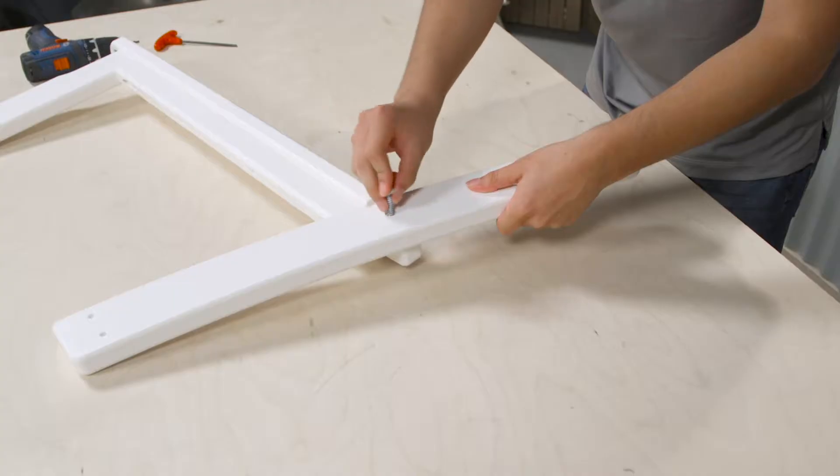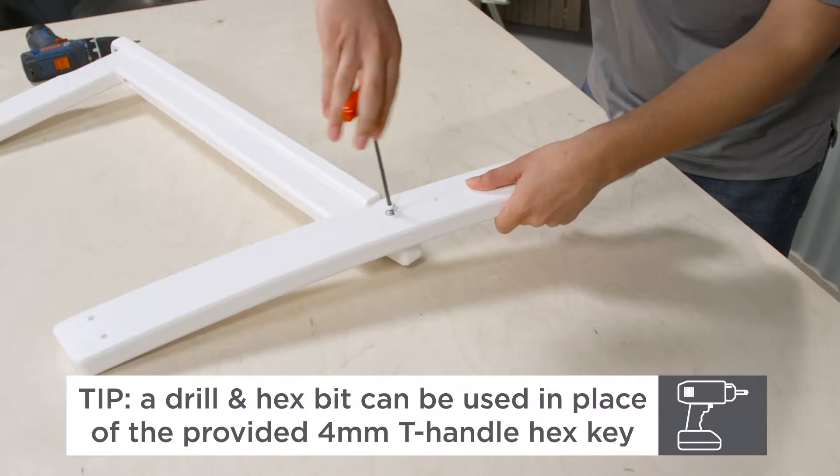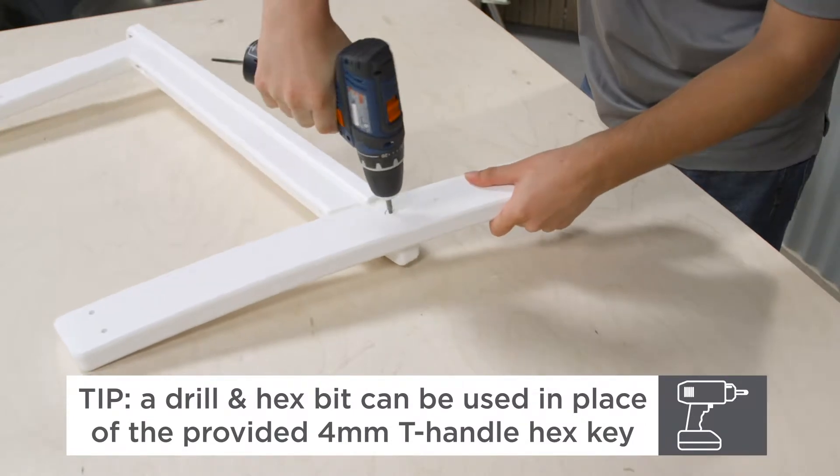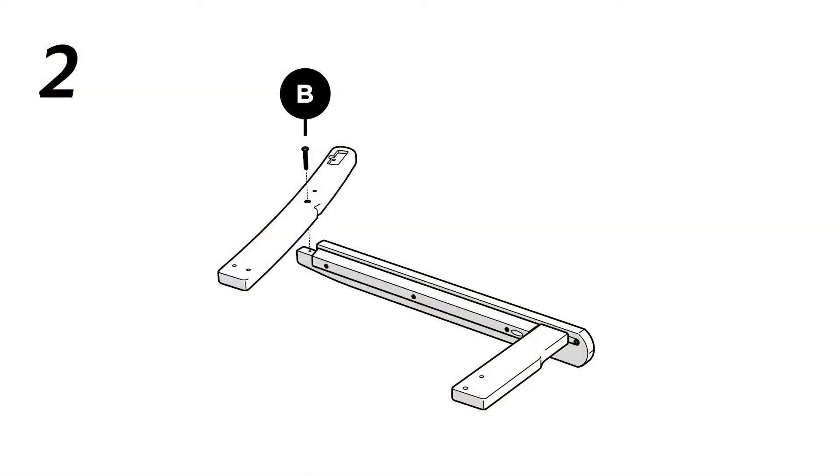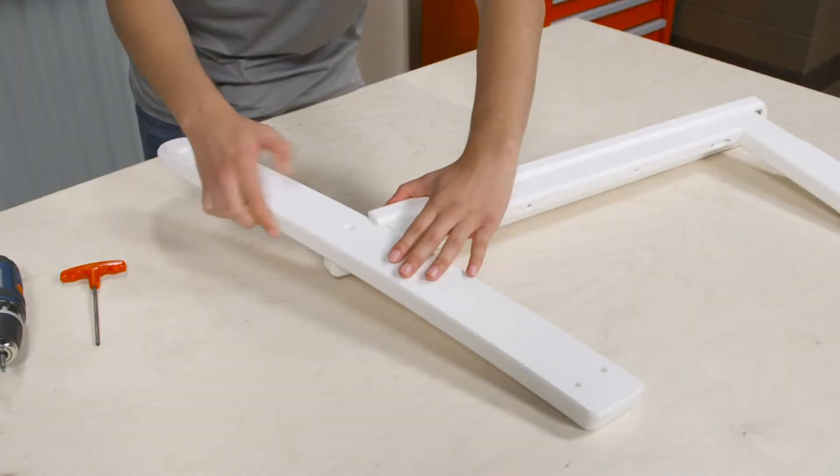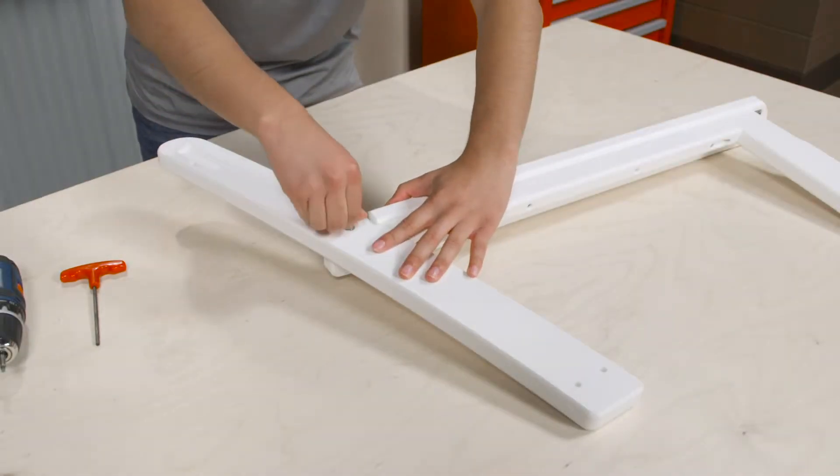Assemble the right side frame using one 1.5-inch flat tip screw. For quicker assembly, you can use a drill and 4mm hex bit in place of the provided 4mm T-handle hex key. Repeat step 1 to assemble the left side frame.